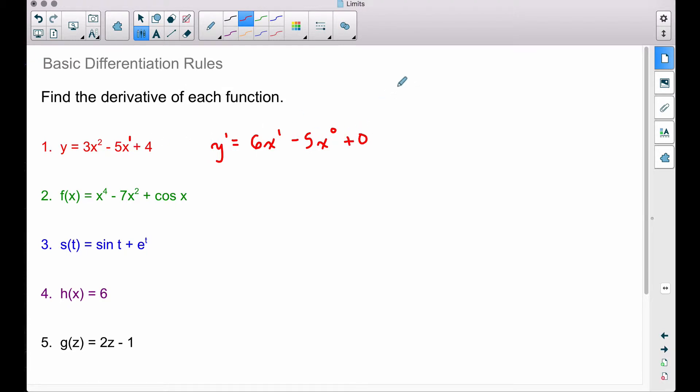Now to explain that to you a little bit more, think about this. If we have 4, that's the same thing as 4x to the 0 power. And the reason why 4 is equal to 4x to the 0 power? Because x to the 0 power is always going to be 1 times 4, we get 4 right back. Let's do that power rule again. If you want to find this derivative, you pull the exponent down, multiply it by what's out here.